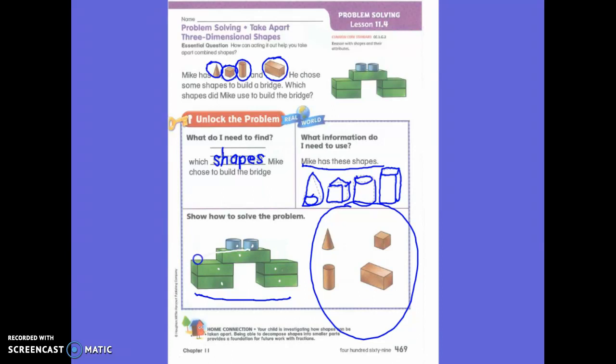Because all of the green ones are rectangular prisms and all of the blue ones are cylinders. So he used two different shapes.